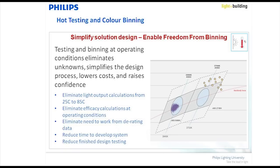LEDs behave differently over temperature. If you have an LED at 25 degrees and then use it in an application at 100 degrees, the color is going to be different — there is a 200 Kelvin difference going from 25 degrees to over 100 degrees. So if you specify a project at 3000 Kelvin and install it, it could suddenly appear almost 2700 Kelvin.